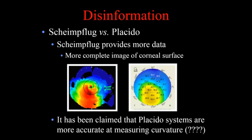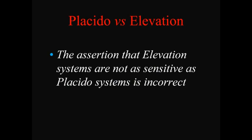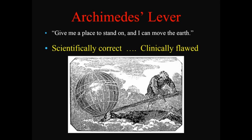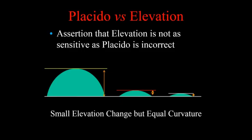It's been claimed that placido systems are somehow more accurate at measuring curvature, and the assertion that elevation systems are not as sensitive as placido is incorrect. I use Archimedes' lever as an example — a statement that sounds logical but clinically is not correct. Archimedes said, 'Give me a place to stand and I can move the Earth.' In theory, with a long enough lever you can generate a huge amount of force, but clinically that's an impossibility. So the concept of placido being inherently more accurate is scientifically correct but clinically flawed.